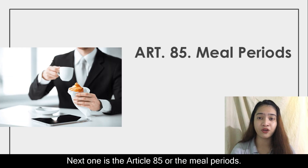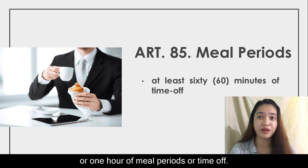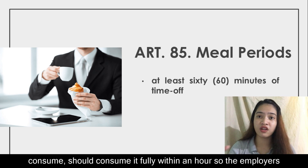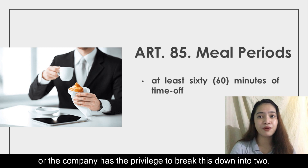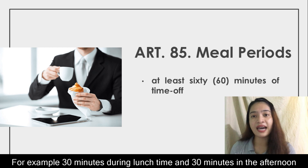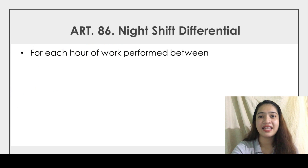Article 85, or the meal periods, states that the employee shall have 60 minutes or 1 hour of meal periods or time off. Since it has not been stated in the law that an employee should consume it fully within an hour, the employer or the company has the privilege to break this down into two — for example, 30 minutes during lunchtime and 30 minutes in the afternoon. So it depends on the company or the employer.